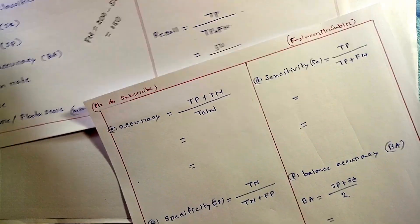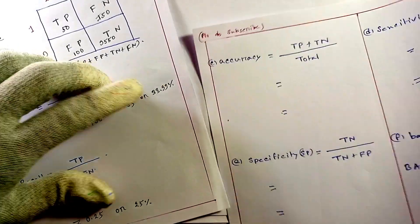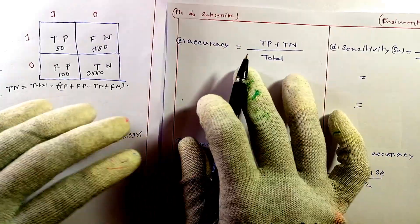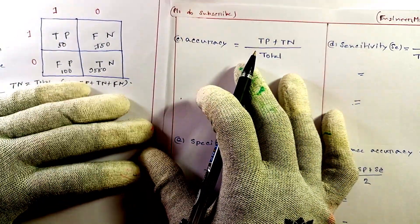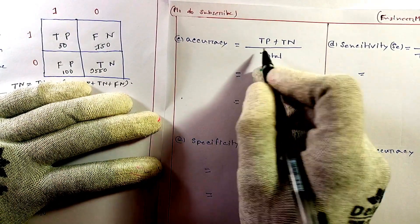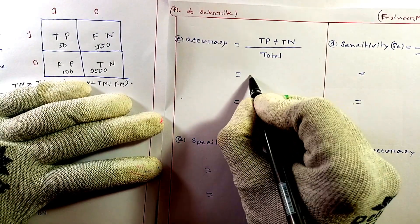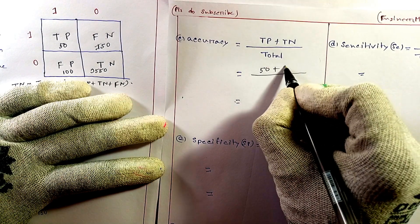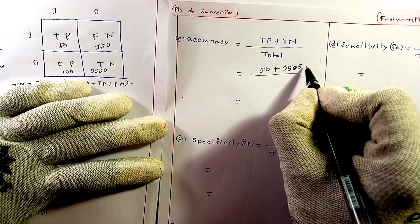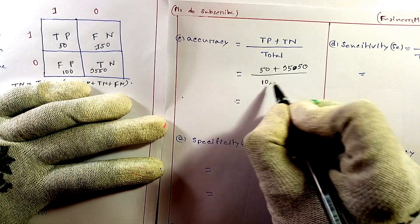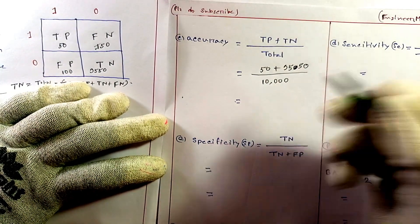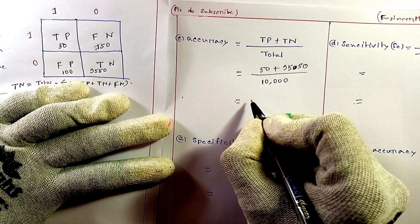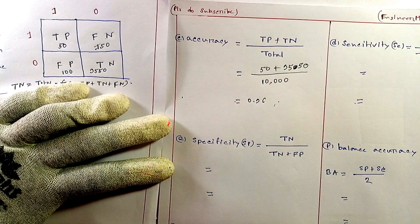For accuracy, we find TP plus TN divided by total. So TP plus TN equals 50 plus 9,550 equals 9,600, divided by total 10,000. Our accuracy value will be 0.96.